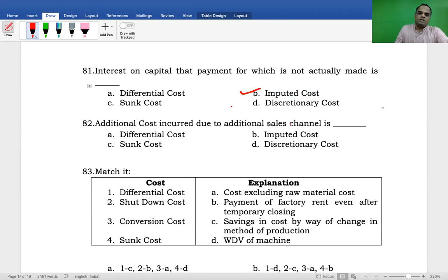Next: Additional cost incurred due to additional sales channel. Differential, Imputed, Discretionary, or Sunk cost? The answer is Differential Cost. Differential cost refers to increase in incremental cost, decrease in decremental cost, or change in cost due to changing level of activity.